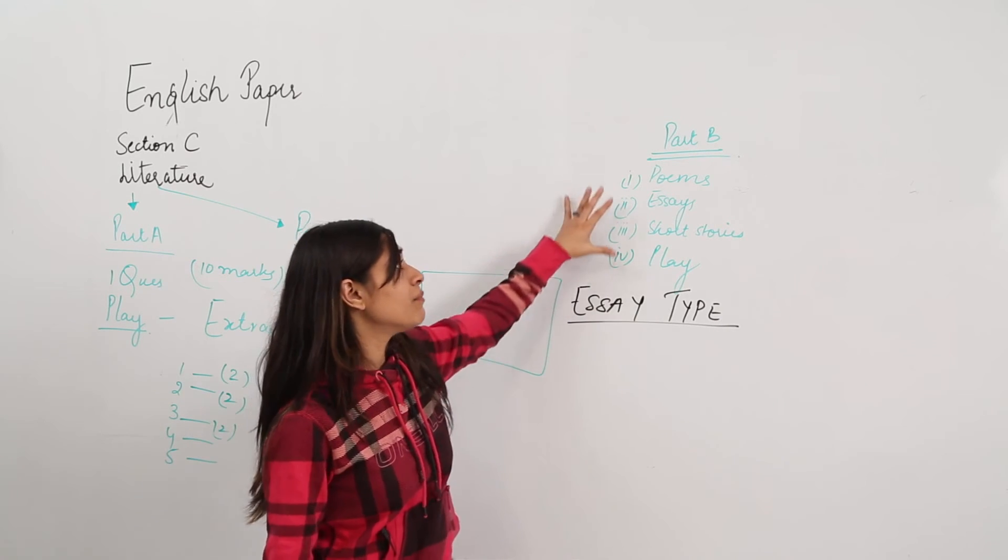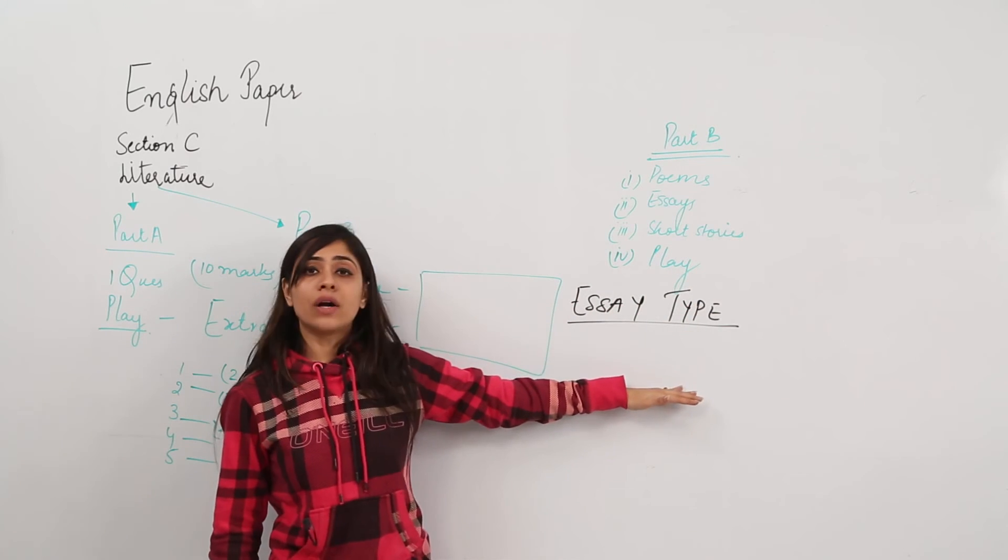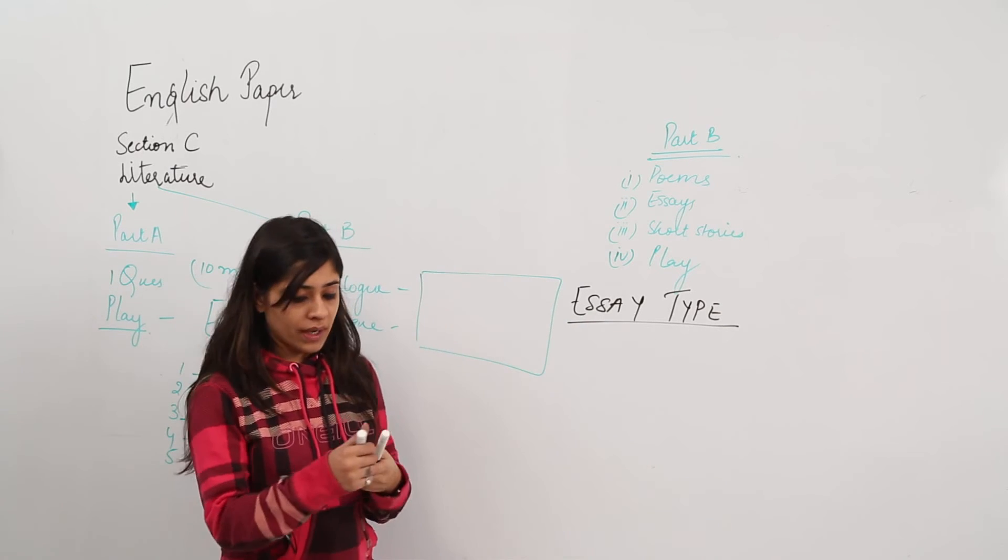You need to write down the entire summary. That is very important. Write down the entire summary of the poem, the essay, the short story, but revolving around a particular theme. In an essay type question, how do you attempt?